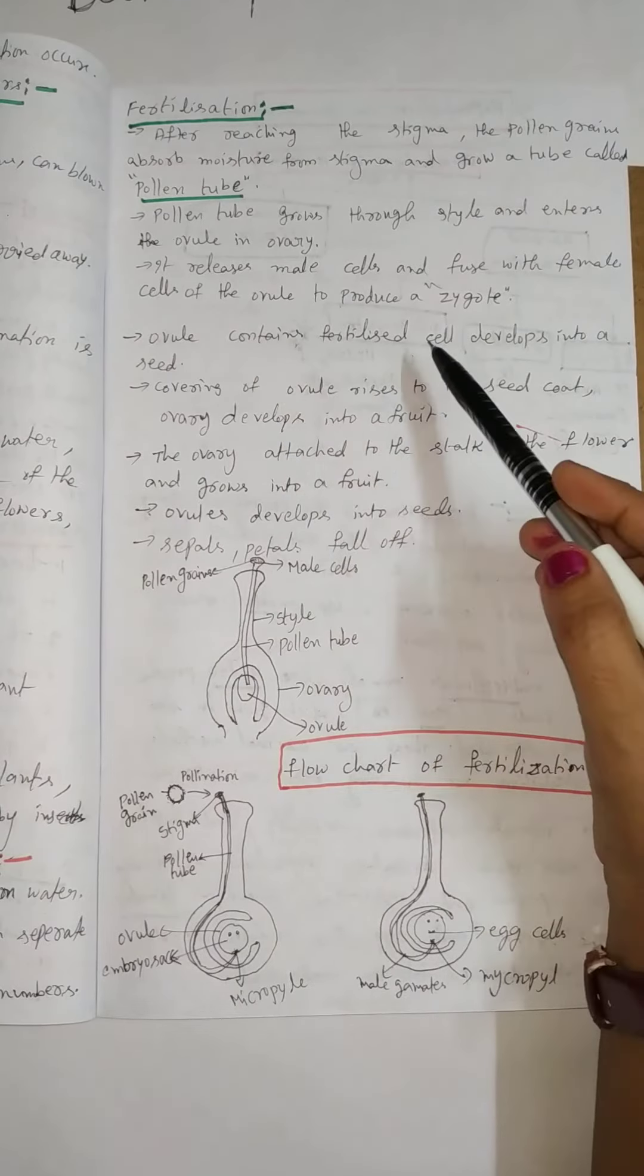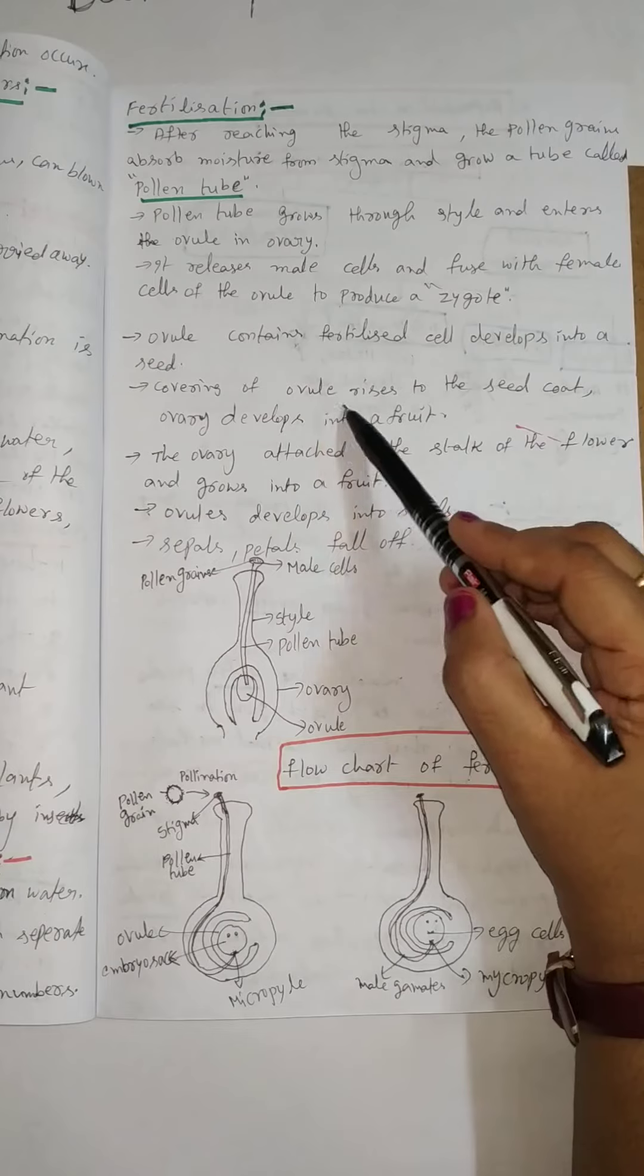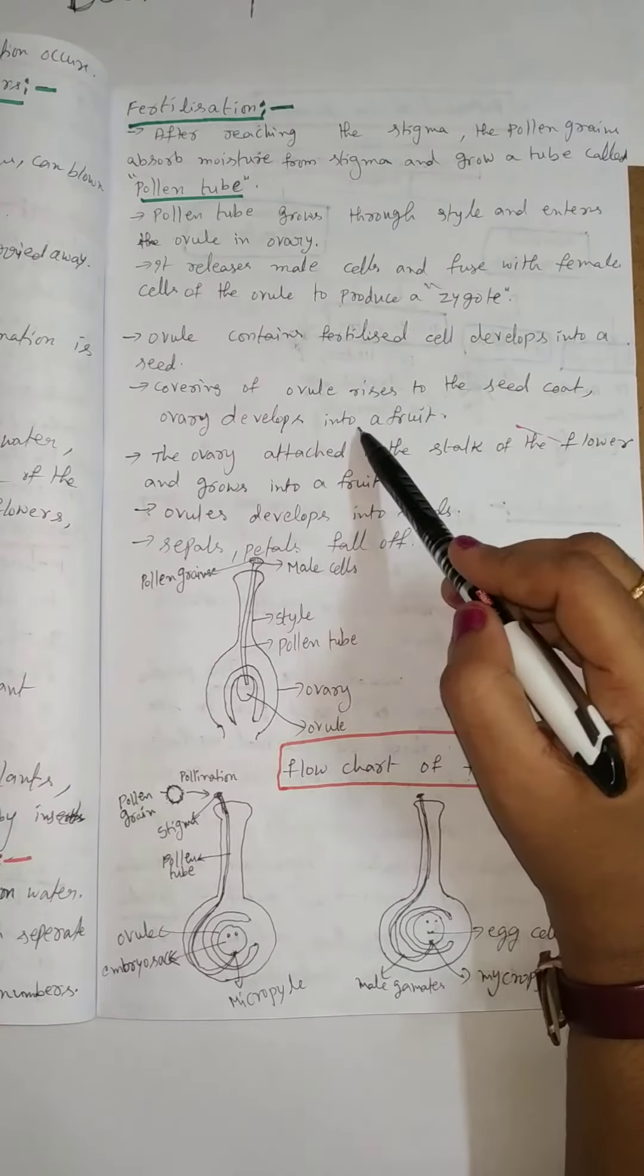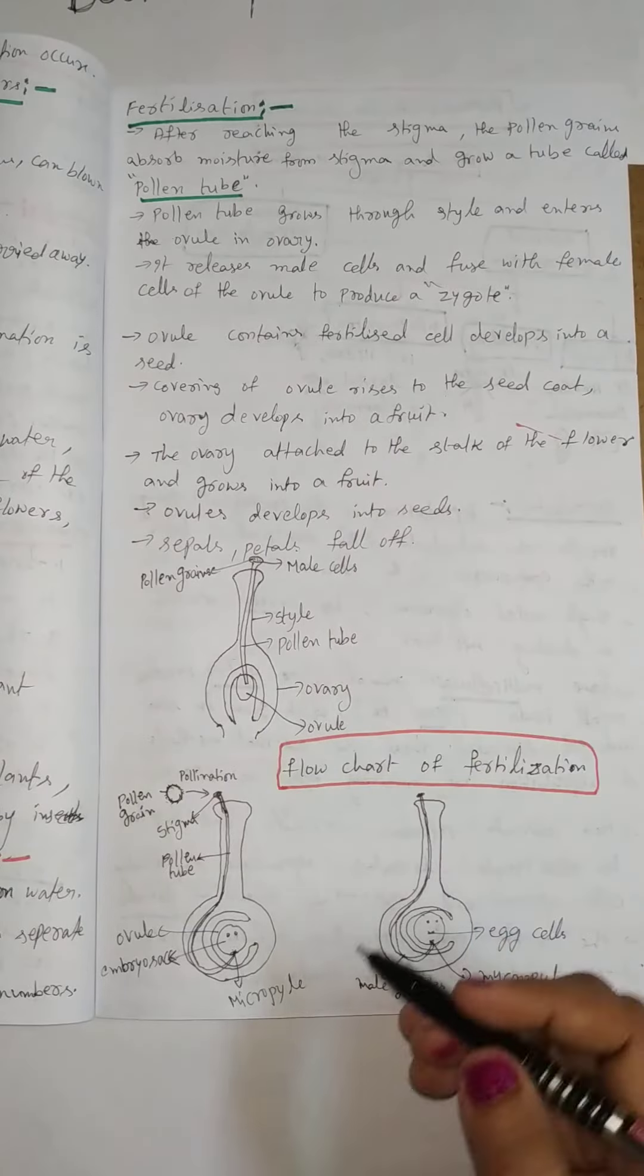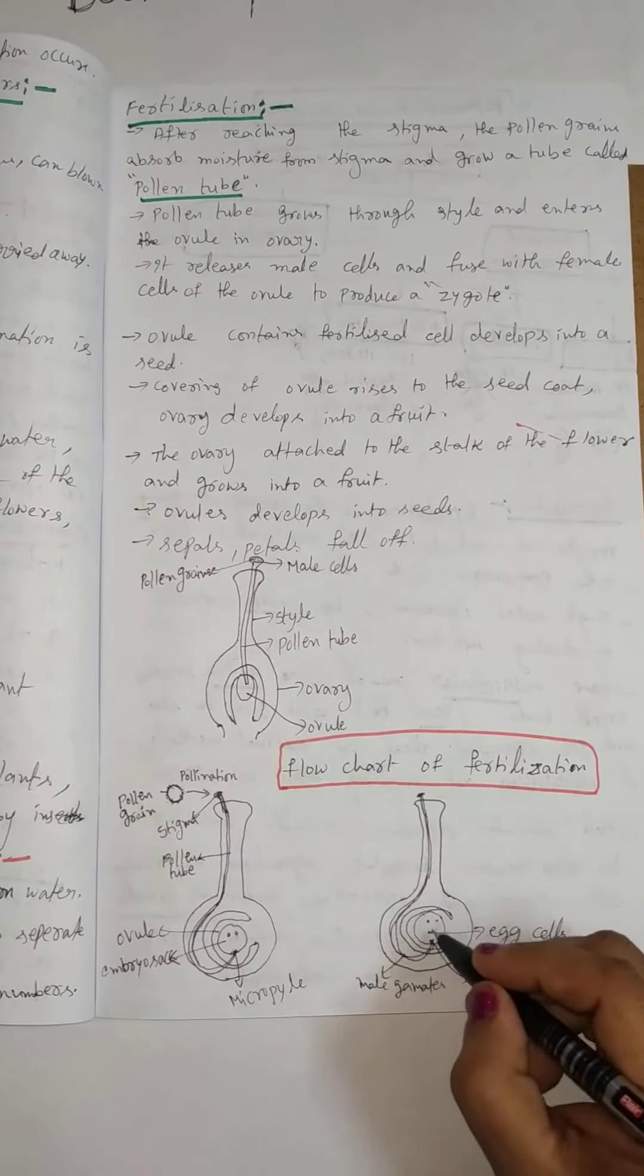The ovule contains a fertilized cell which develops into a seed. The covering of the ovule gives rise to the seed coat. The ovary develops into a fruit. Here this ovary is developed into a fruit and ovules develop into seeds.